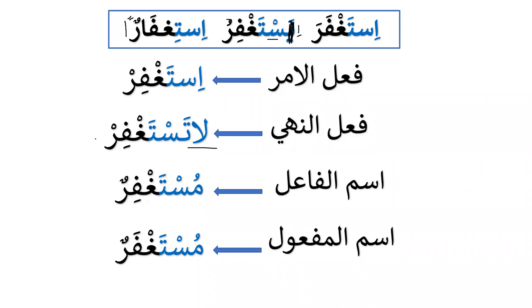Ism al-fa'il in derived forms always starts with mu, and the second-to-last letter takes kasra — so it becomes mustaghfirun. Ism al-maf'ul is similar, but the second-to-last letter takes fathah — mustaghfarun. This rule applies from Form 2 through Form 10, except for verbs with tashdeed where it can be harder to distinguish. Generally: kasra indicates ism al-fa'il, and fathah indicates ism al-maf'ul.